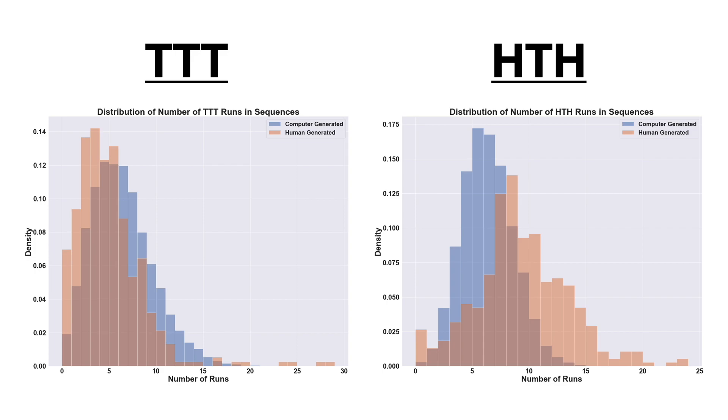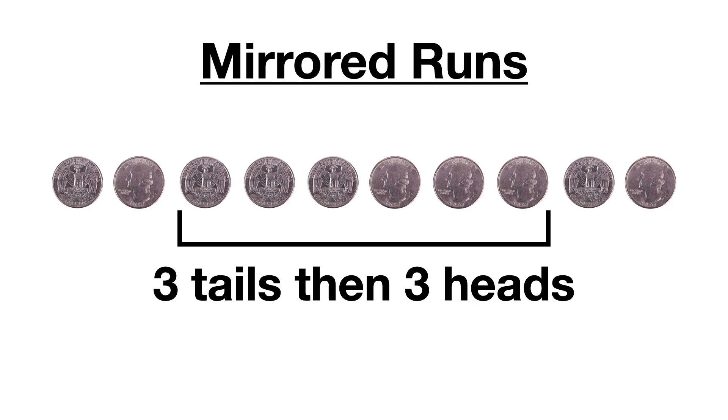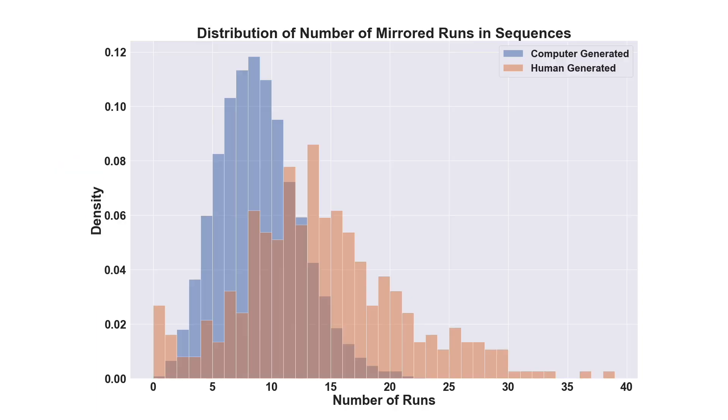The last metric that I wanted to show was the mirrored runs that we talked about earlier. We can see that human made sequences contain a larger amount of these mirrored runs compared to the randomly generated sequences.